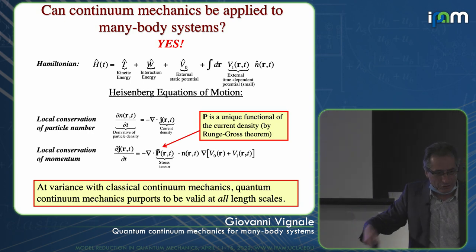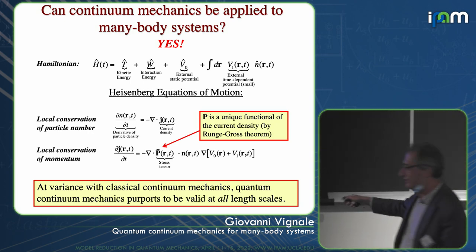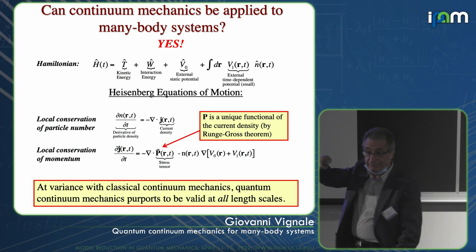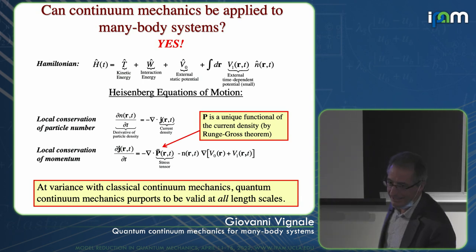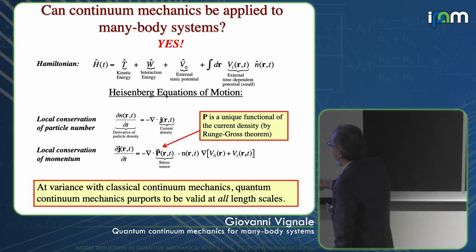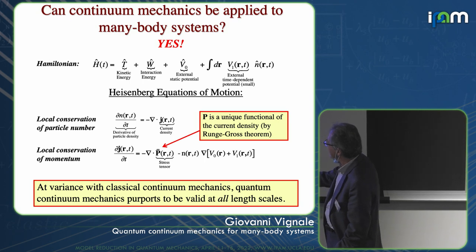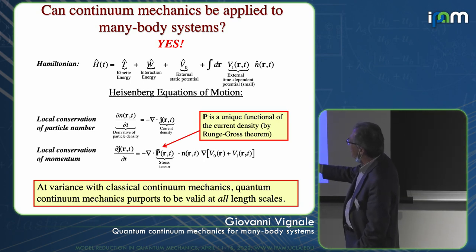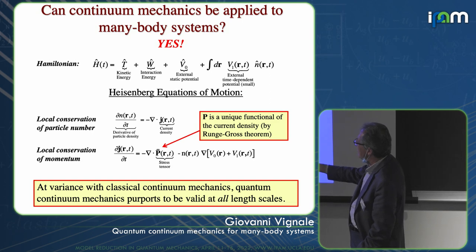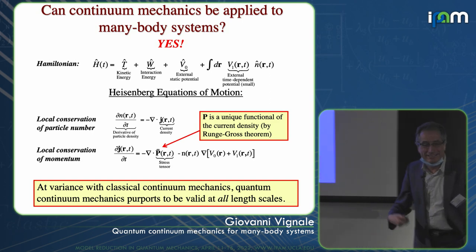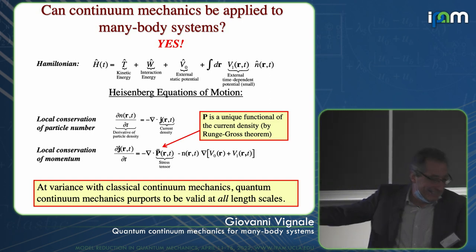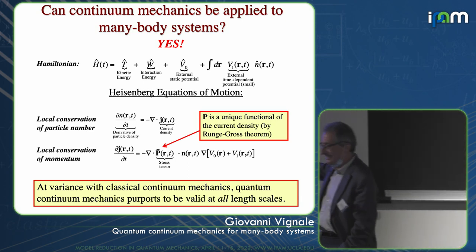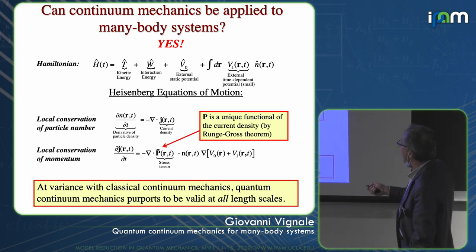I'm not writing down the formula for the stress tensor here — it's quite nasty. It involves derivatives of the field operator because you have N particles. The catch with this equation is that you really don't know how to express this stress tensor in terms of the currents and the density. That's the difference from elasticity and hydrodynamics. However, there is this theorem — I should call it a pseudo-theorem — because it's not really a theorem from a rigorously mathematical point of view.